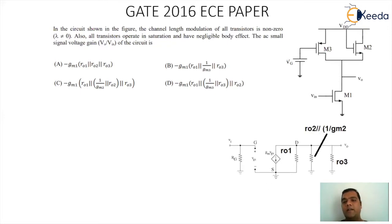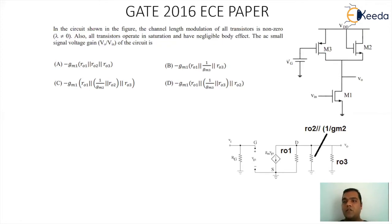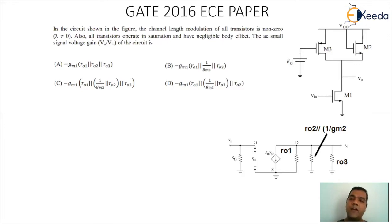In the AC equivalent, MOSFET 1 has output resistance RO1 at its drain. For MOSFET 2, the output terminal connects to its source, so the impedance between source and ground is RO2 ∥ (1/gm2). For MOSFET 3, the connection is between drain and ground, so the impedance is simply RO3.